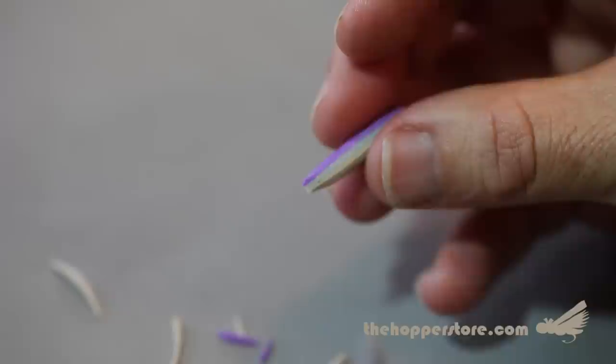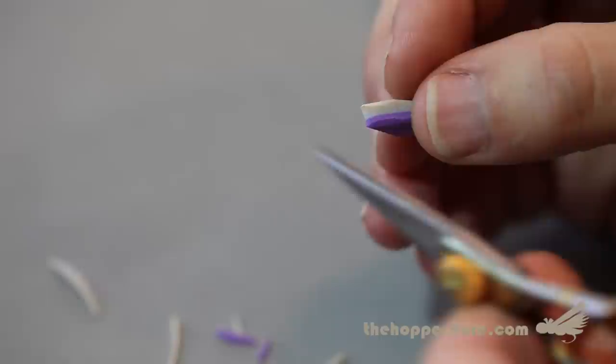Make a couple trims like that for the tail. And the head, you can angle that a little bit. And there's your perfectly trimmed Moorish Hopper body.